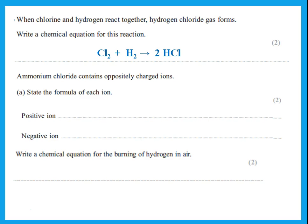Ammonium chloride contains oppositely charged ions. Write the formula of the positive ion and the negative ion. Remember the first one written is always positive and the second is always negative. Ammonium is NH4+, with 1 positive charge because its valency is 1. Chloride is Cl−, with 1 negative charge because its valency is 1.